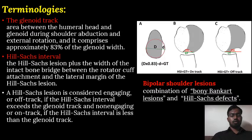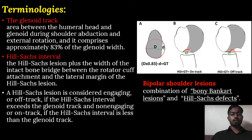The glenoid tract is the area between the humeral head and the glenoid during shoulder abduction and external rotation, and it comprises approximately 80% of the glenoid width. The Hill-Sachs interval is the Hill-Sachs lesion plus the width of the intact bone bridge between the rotator cuff attachment and the lateral margin of the Hill-Sachs lesion. A Hill-Sachs lesion is considered engaging or off-track if the Hill-Sachs interval exceeds the glenoid tract, and non-engaging or on-track if the Hill-Sachs interval is less than the glenoid tract. Off-track lesions are more commonly associated with recurrent dislocations of the shoulder joint.